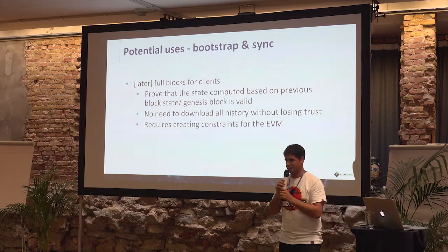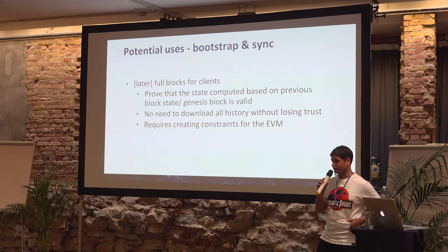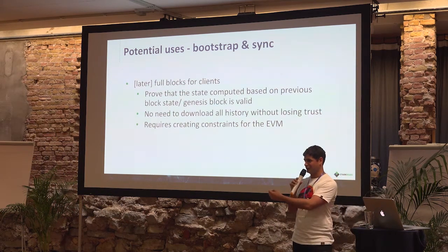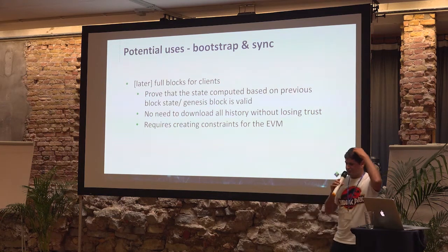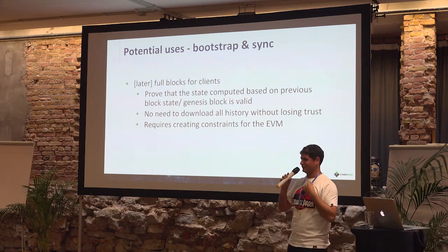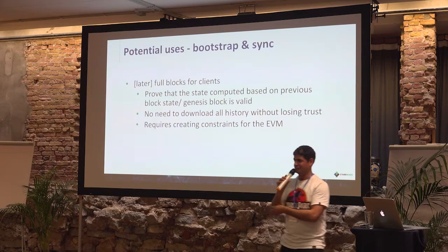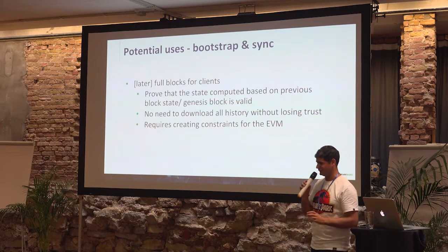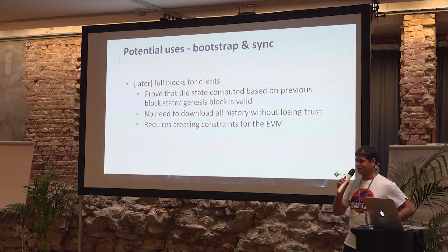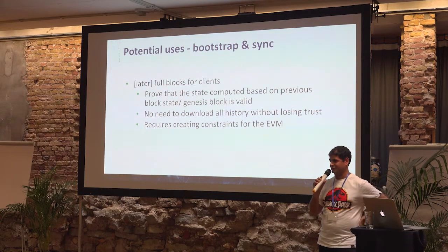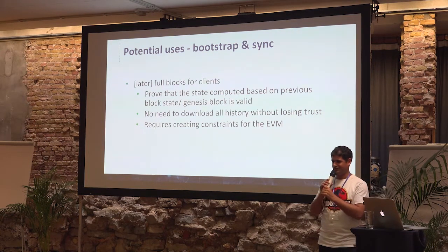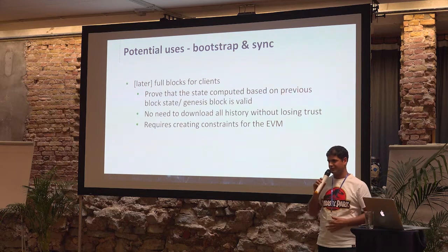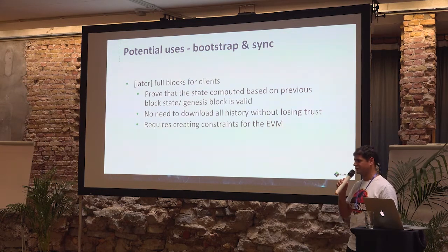Now you have all those constraint polynomials and they represent your computation. There are some polynomial tricks to force the knowledge of the correct computation — to make the constraint be zero over the whole computation. This verification that you do know the correct polynomials that, when submitted inside the constraint polynomial, give zero — this check is comparably fast and easy to verify. There is another hidden element, which is low-degree testing — you want to prove that you are using polynomials and not something else for this equation.